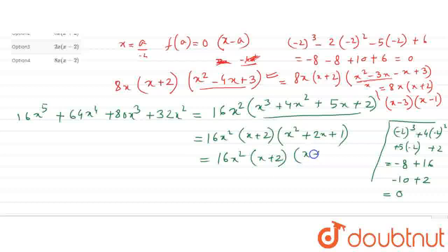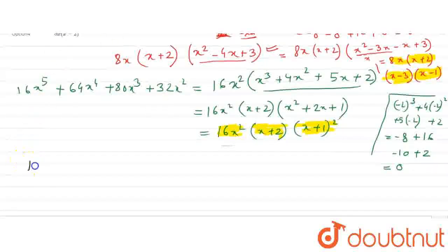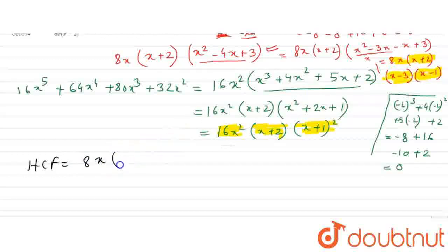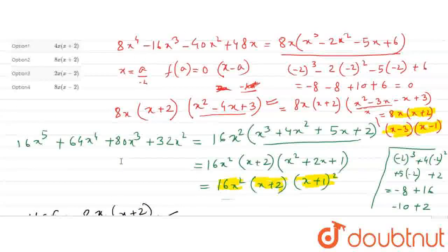We have x plus 1 whole square, since x squared plus 2 multiplied by x into 1 plus 1 squared equals x plus 1 squared. We can find the two factorized forms: the first expression is 8x multiplied by x plus 2, times x minus 3, times x minus 1. The second is 16x squared multiplied by x plus 2 times x plus 1 squared. The common factor between them is 8x multiplied by x plus 2. So the final answer is 8x into x plus 2, which is option 2. Thank you.